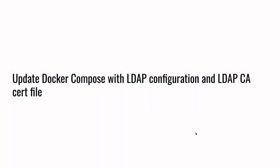Now that we have our LDAP configuration file ready along with the CA certificate file fetched using the OpenSSL command, it is time to configure our Docker Compose file with the LDAP config.yaml file and the trusted_cas.pem file. These two files can be volume-mounted into each container in the Docker Compose file. The Docker Compose file can be obtained from the OpenSearch documentation page, which contains a sample Docker Compose file. I have also shared the blog link in my description where you can refer to it.